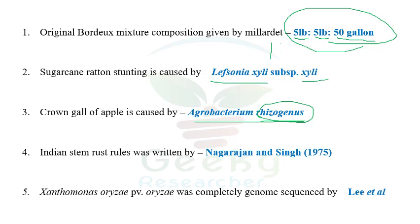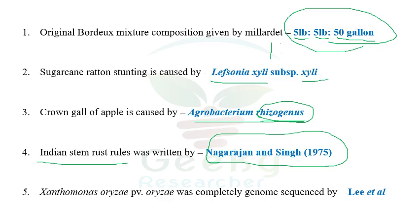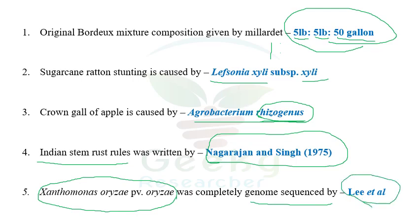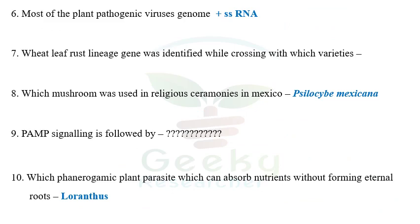The fourth question: Indian stem rust rules were given by Nagarajan and Singh, whereas the Paksinia pathway was given by Nagarajan and Joshi in 1980. The fifth question: Xanthomonas oryzae pv. oryzae, which causes bacterial leaf blight of rice, was completely genome-sequenced by Lee et al. He was the first to completely genome-sequence the bacterial blight of rice pathogen.